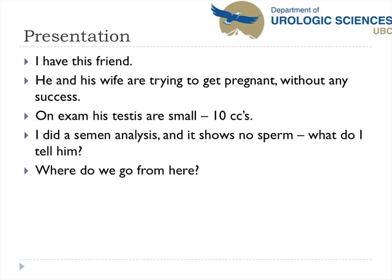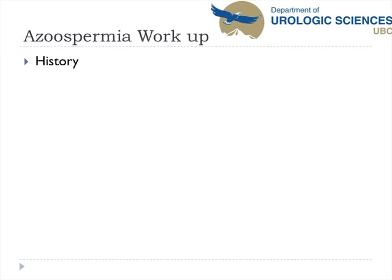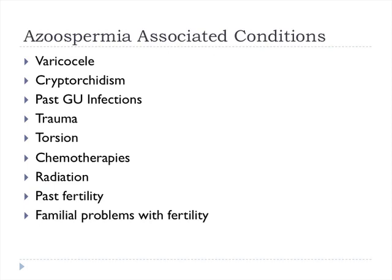So the doc asks, where do we go from here? You start off by taking a history for associated conditions such as varicocele, cryptorchidism, past infections, trauma, torsion, chemo, radiation, past fertility problems, and a family history.